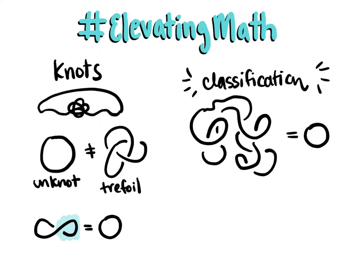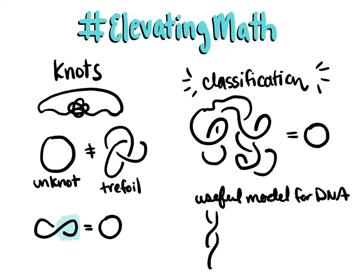So why is this useful? Well, knot theory can provide a useful model for DNA. We know that DNA has this double helix structure, but if we simplify a little bit and think of this helix as a line, and then zoom out, DNA starts to look a lot like a knot. This is because DNA can be really tangled up.